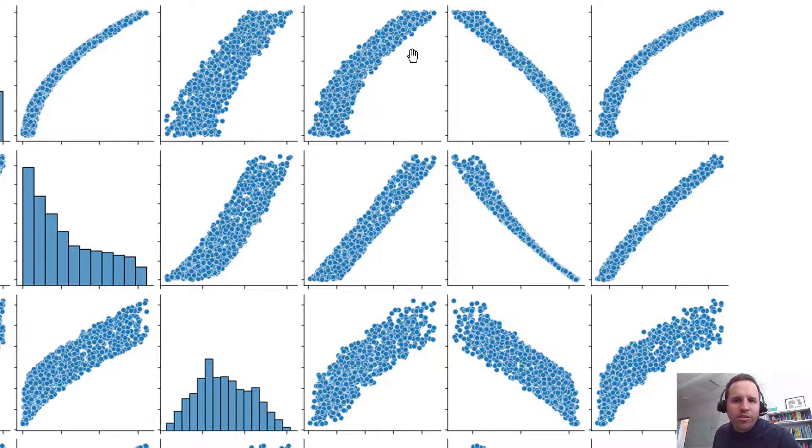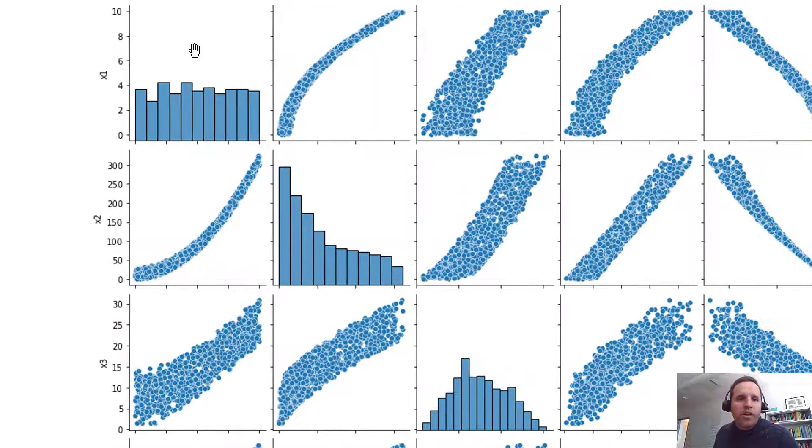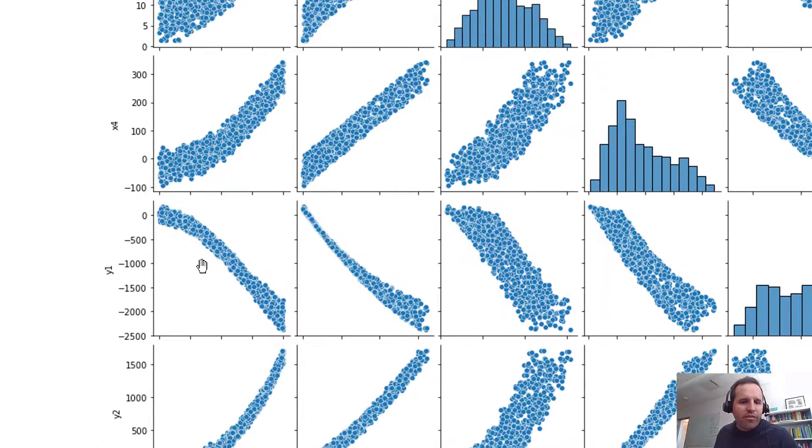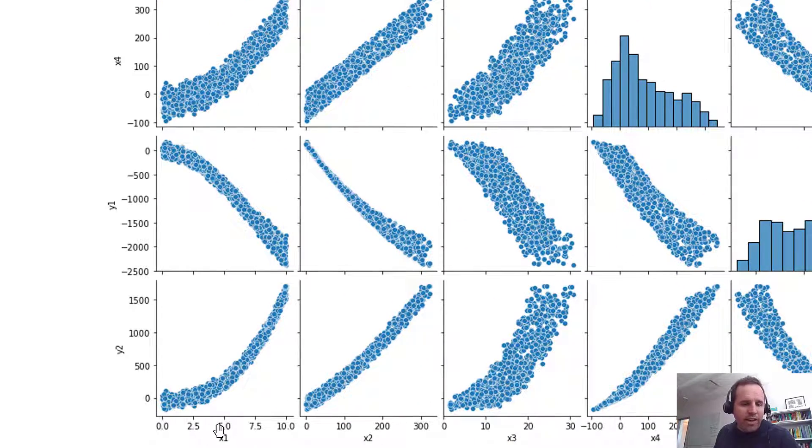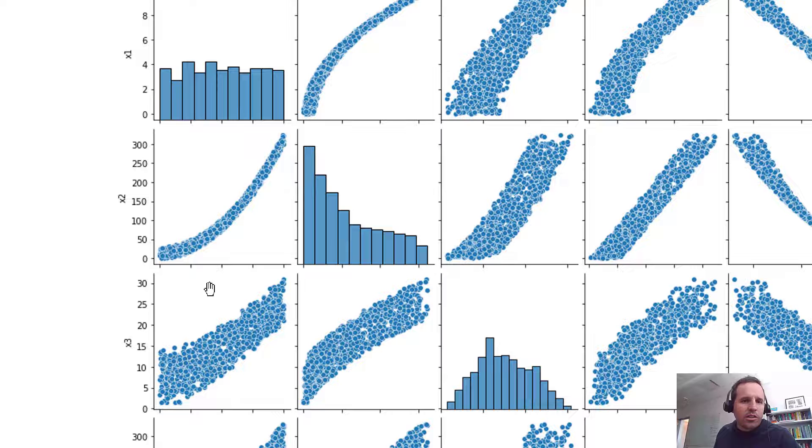Again, here we're looking at X1 versus X4. This is X1 versus Y1, and this is X1 versus Y2. So if we did the same thing, going down the column, we have X1 now on the X axis. And we can take a look at X1 on the X axis versus X2 on the Y axis.